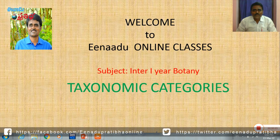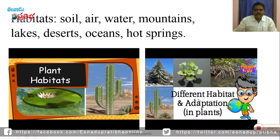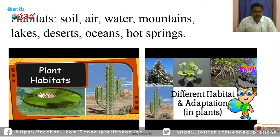Hi, welcome to Yenadu online classes. Today I want to discuss about taxonomic categories, intermediate first year botany. You know that plants are growing in different habitats like soil, air, water, mountains, lakes, deserts, oceans, hot springs, ponds, pools, rocks, and saline water. Different habitats have different types of species, so plants can be adapted to different eco-climatic conditions.